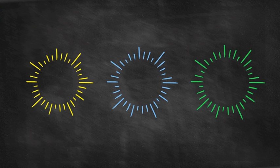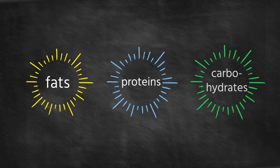There are three main nutrients found in all sorts of foods. They're fats, proteins, and carbohydrates.